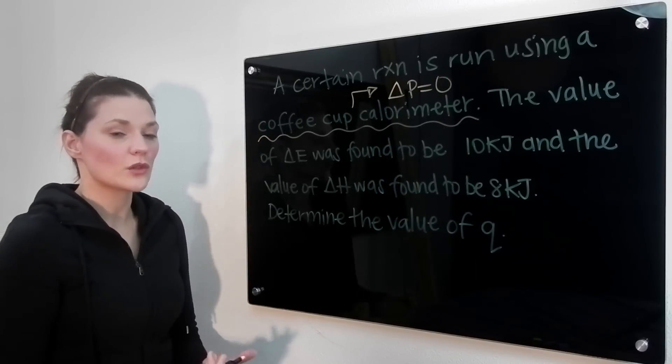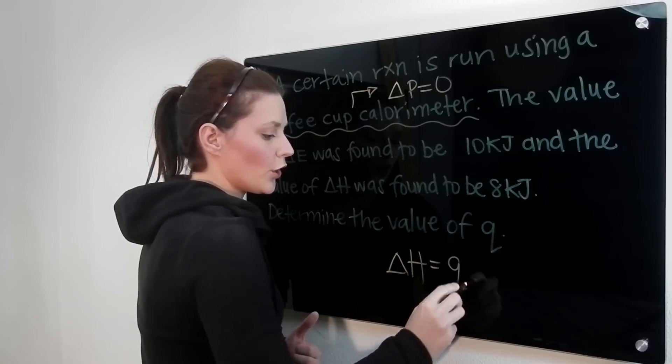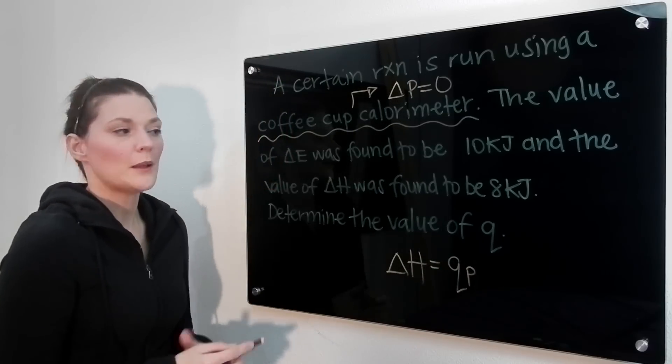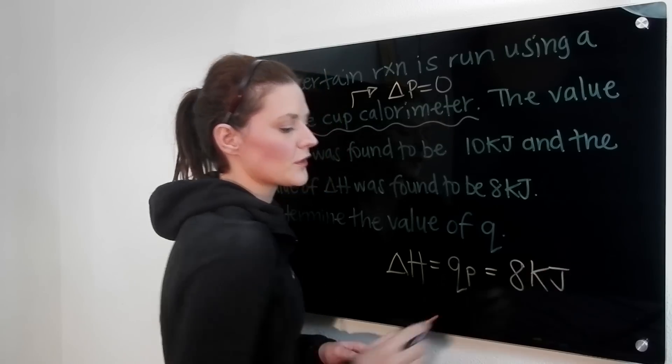In that circumstance you need to know the relationship that delta H is equal to Q at constant pressure. Based on the question then, that means that Q would have to be equal to 8 kilojoules.